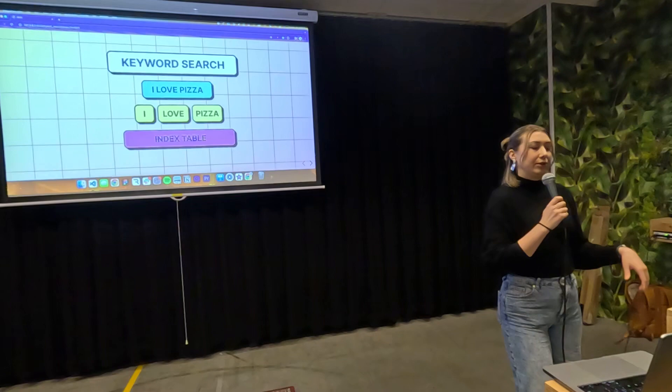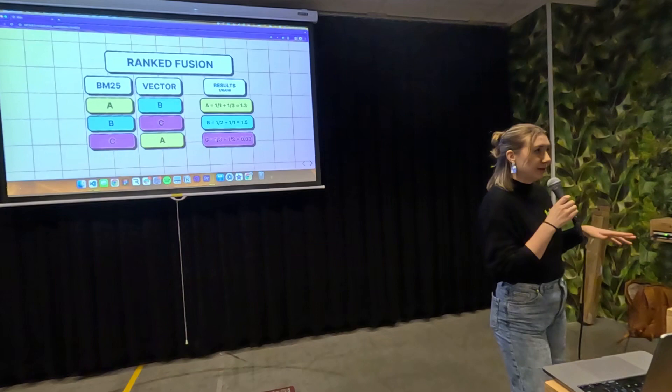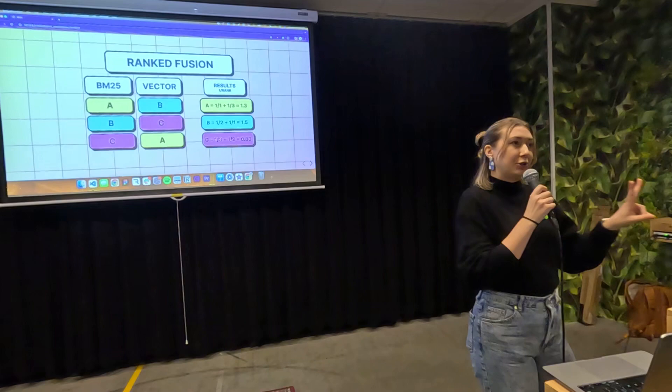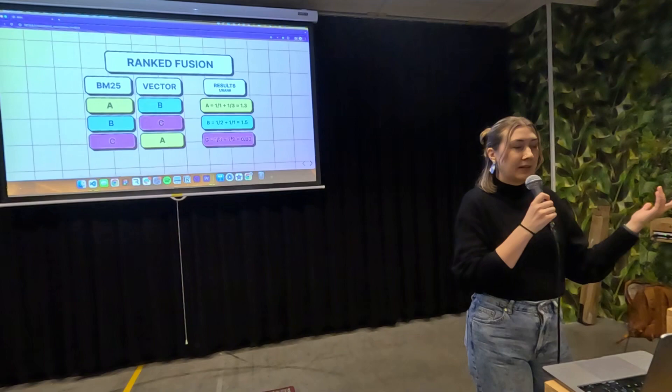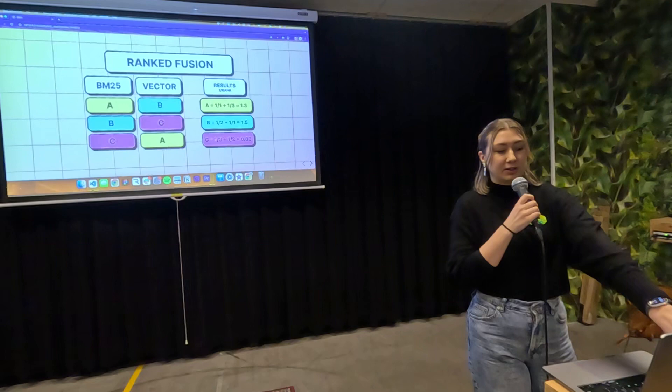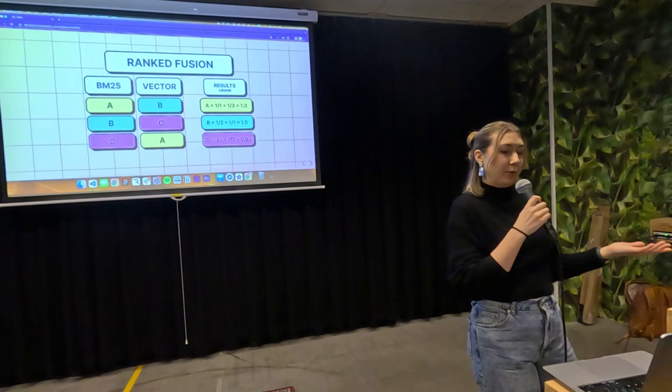Now we have a list of documents from vector search and from keyword search, but we need a way to combine these two scores from two different algorithms. We offer two solutions in Weaviate. The first is ranked fusion, which gives a score based on the rank position rather than the original score. So if A is in position 1, it gets 1/1; if vector is in position 3, it gets 1/3; the final score ends up being 1.3.